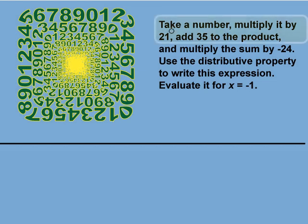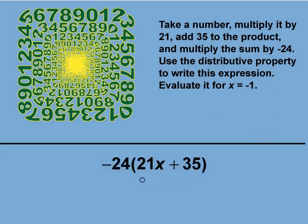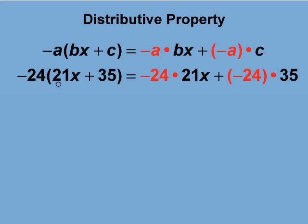Let's start with this part. Take a number and multiply it by 21. Since we don't know which number, we designate it as 21x. This term is increased by 35, so we write 21x plus 35. This sum, or the entire expression, is multiplied by negative 24. So we enclose the expression in parentheses and multiply the whole expression by negative 24, as shown here. This is the mathematical equivalent of this verbal expression. We now distribute negative 24 to both terms, and we get negative 504x minus 840. Notice that the negative 24 changes addition to subtraction here.